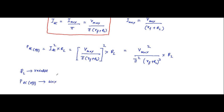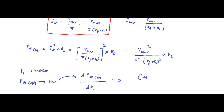Maximum DC output power will occur when we differentiate the output DC power with respect to the variable load resistance and set it equal to zero. If you remember the statement of the maximum power transfer theorem — this is the same as that. So we will differentiate this expression.